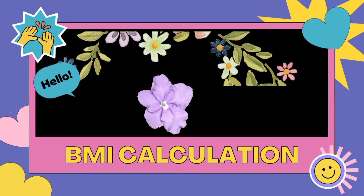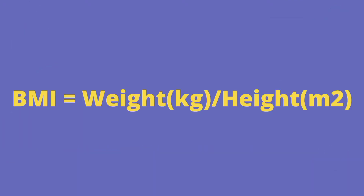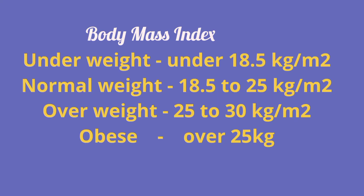Body mass index is a person's weight in kilograms divided by the square of height in meters, and is expressed in kilograms per meter square.